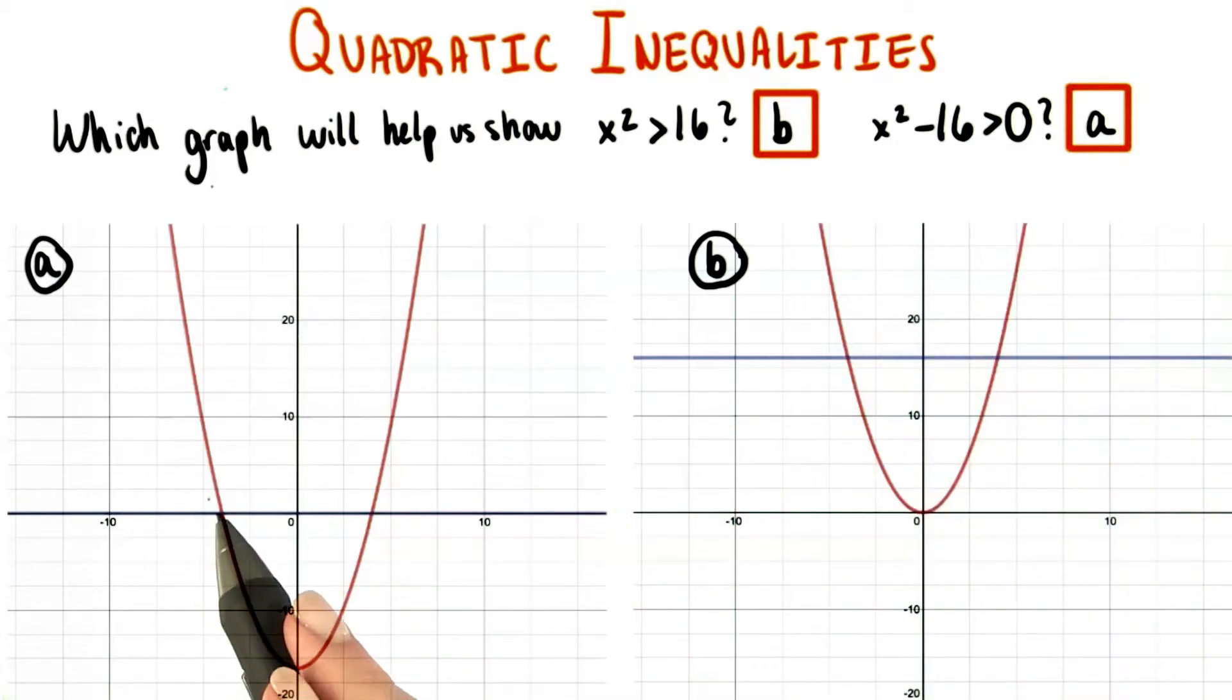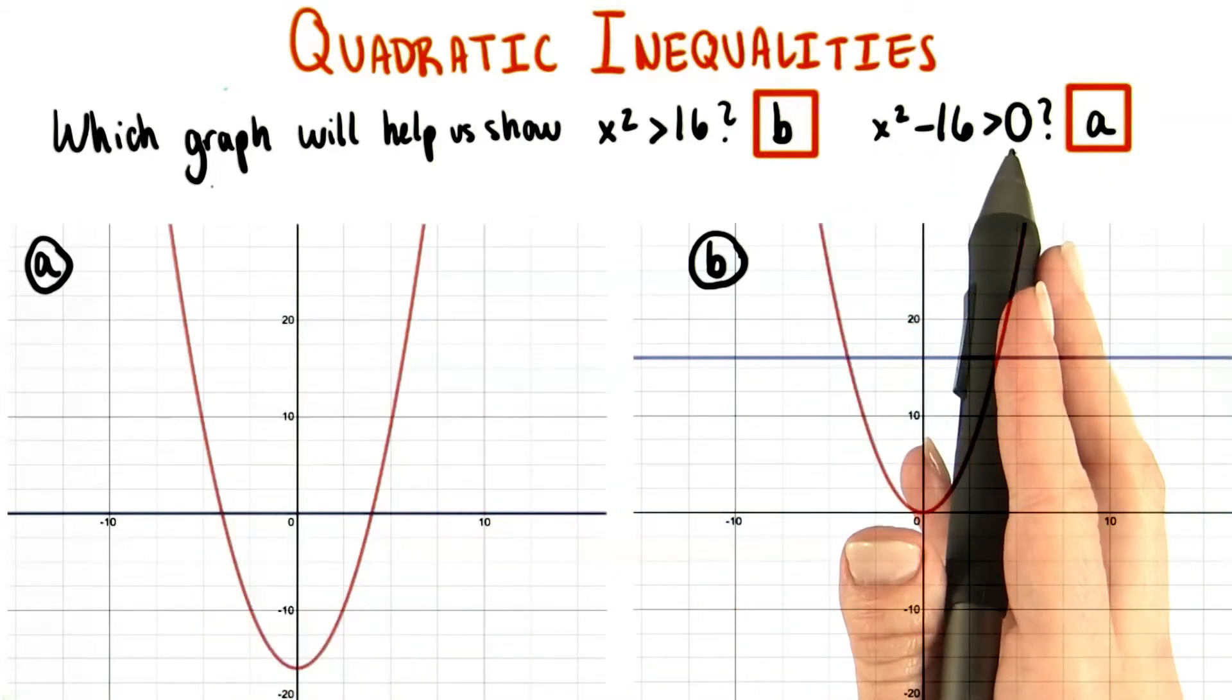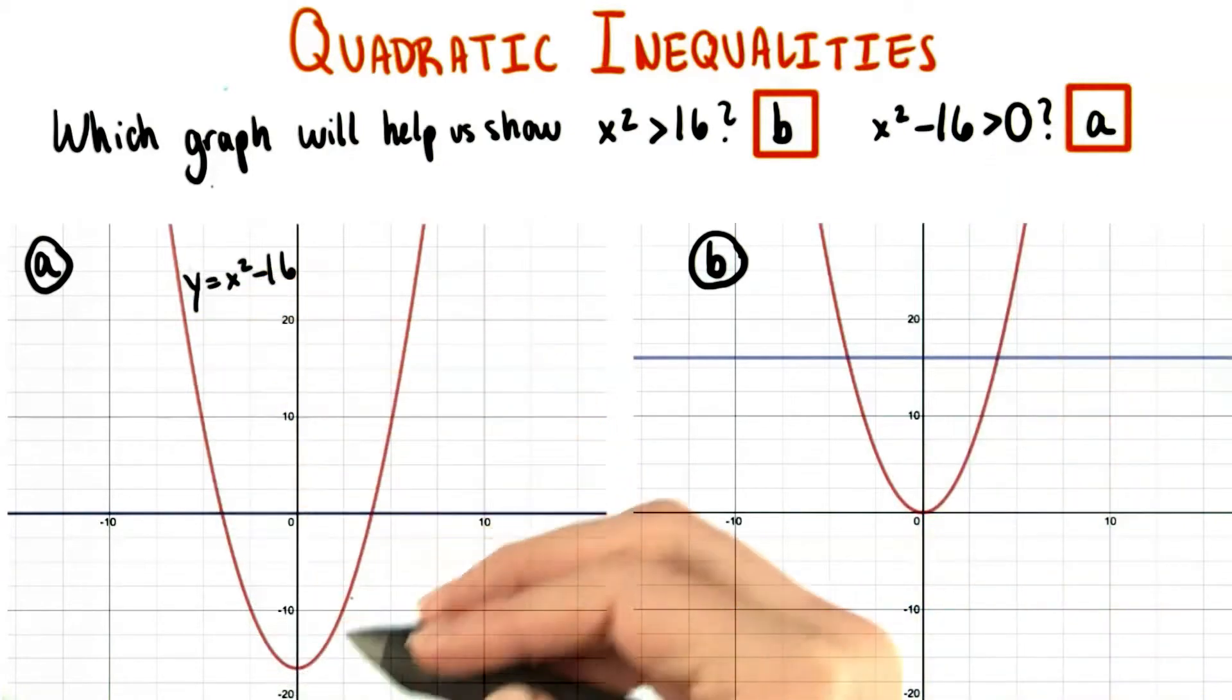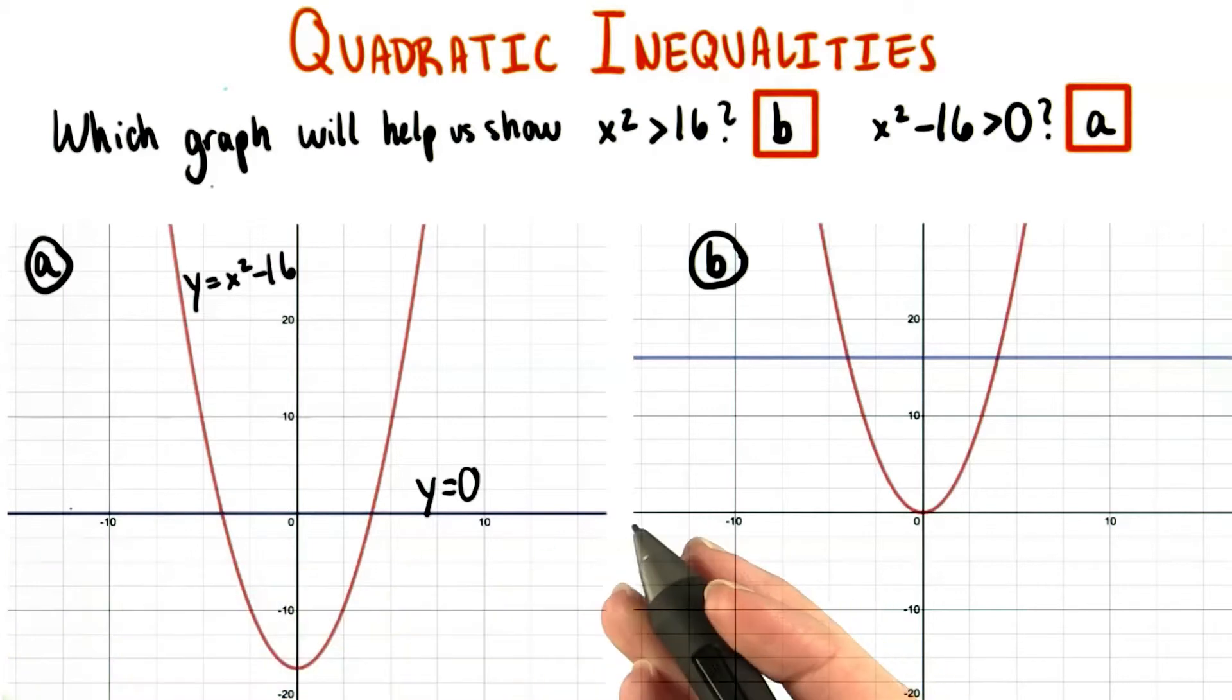So in this first graph over here, which we know corresponds to x squared minus 16 is greater than 0, I've graphed the parabola y equals x squared minus 16, and I've graphed the line y equals 0, just the x axis.